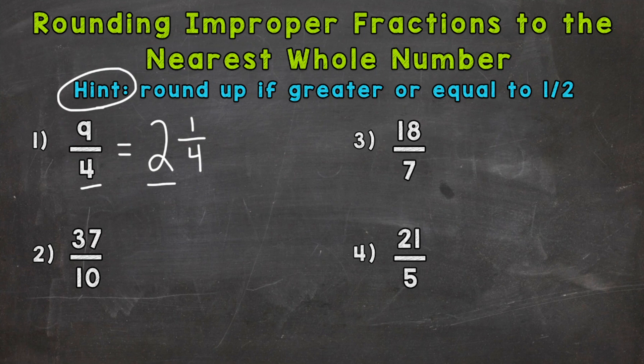So we need to see if 2 and 1 fourth is closer to 2, rounds to 2, or if it's closer to 3, so rounds to 3. Let's take a look at our fractional part here. And we need to determine if 1 fourth is greater or equal to a half, or if it's less than a half. So 2 fourths is half, and we only have 1 fourth. So this is less than a half.